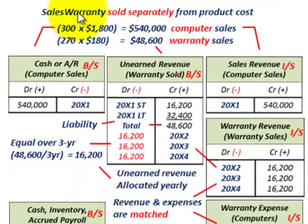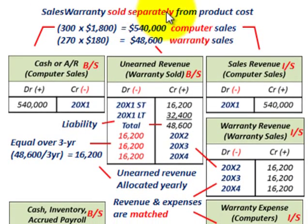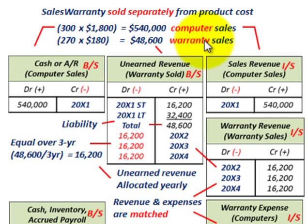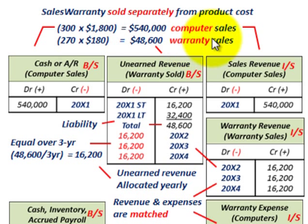For the sales warranty approach where it's sold separately from the product cost, we first determine computer sales and warranty sales. For computer sales: 300 computers at $1,800 each gives us $540,000 in total sales. For warranty sales: 270 contracts at $180 each gives us $48,600 in warranty sales.